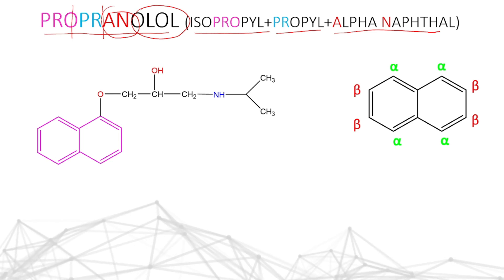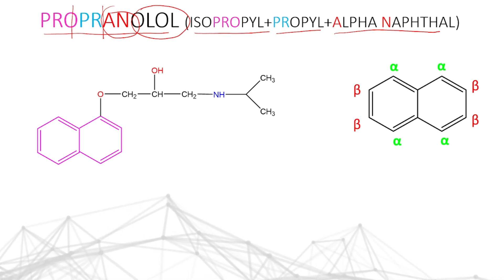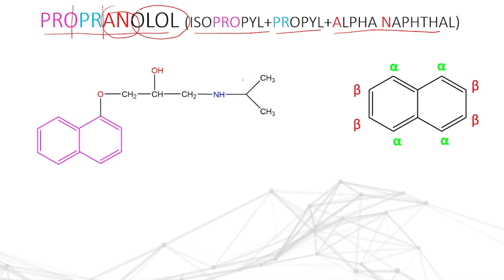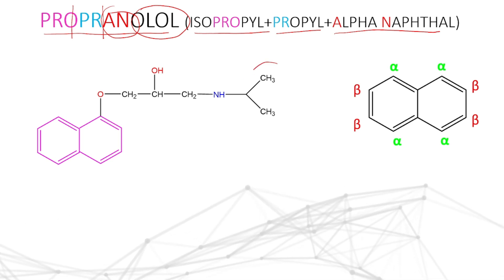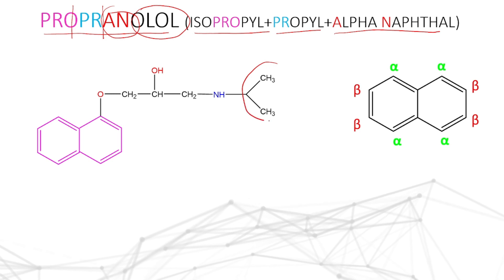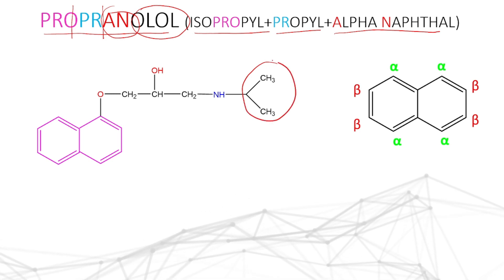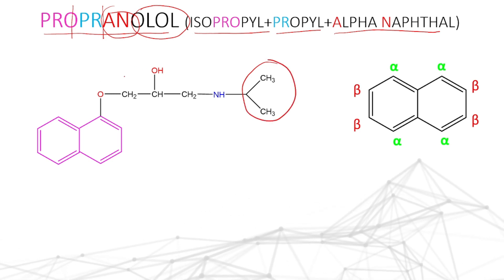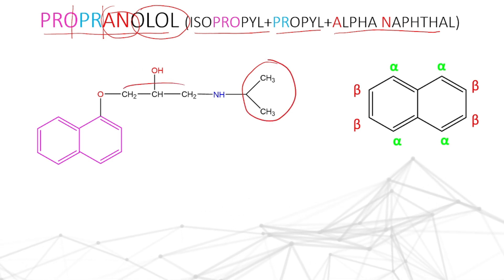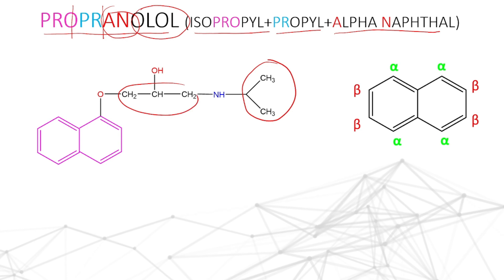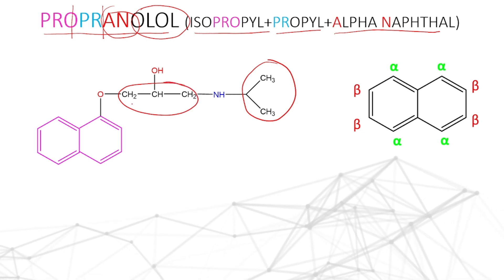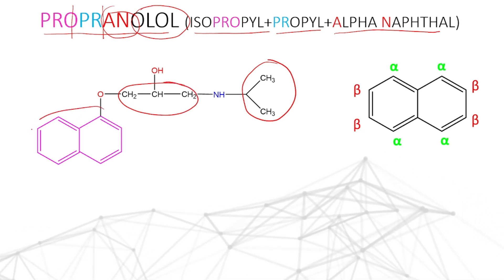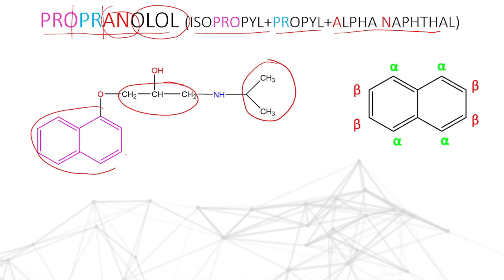This is the structure of propranolol. In this propranolol, the isopropyl group is here. This is the isopropyl group. Next one is the propyl group — a three carbon containing propyl group is here. Next, alpha naphthyl — this is the alpha naphthyl.